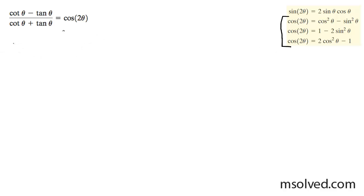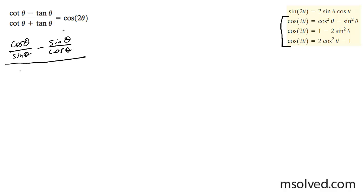I'm going to break these down to their simplest form. So this can be cosine theta over sine theta — that's cotangent — minus sine theta over cosine theta. And then it's all over cosine theta, sine theta, plus sine theta, cosine theta.